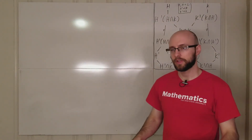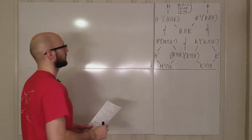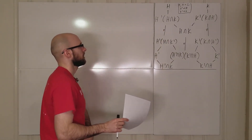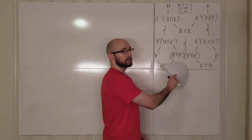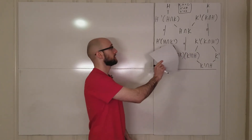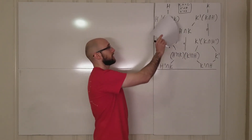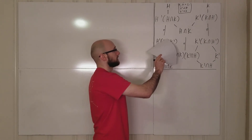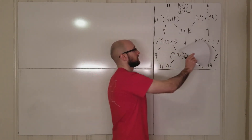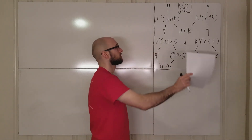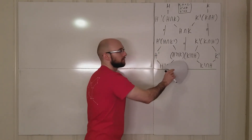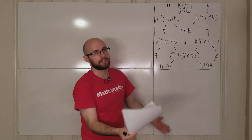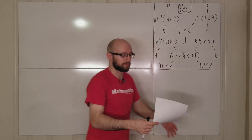I'm not sure if I'm going to get through the rest of the butterfly lemma in this video, but I'm going to give it a try. We know h and k are subgroups of g, h prime is normal in h, and k prime is normal in k. What we proved is that this subgroup is normal in here, and then in the last video we proved that this subgroup is normal in here, and similarly this subgroup is normal in here. The last thing we need to prove is that this quotient is isomorphic to this quotient, and how we're going to do that is prove this quotient is isomorphic to this quotient, and then by a symmetric argument this quotient is isomorphic to this quotient, and then by transitivity this quotient is isomorphic to this quotient.